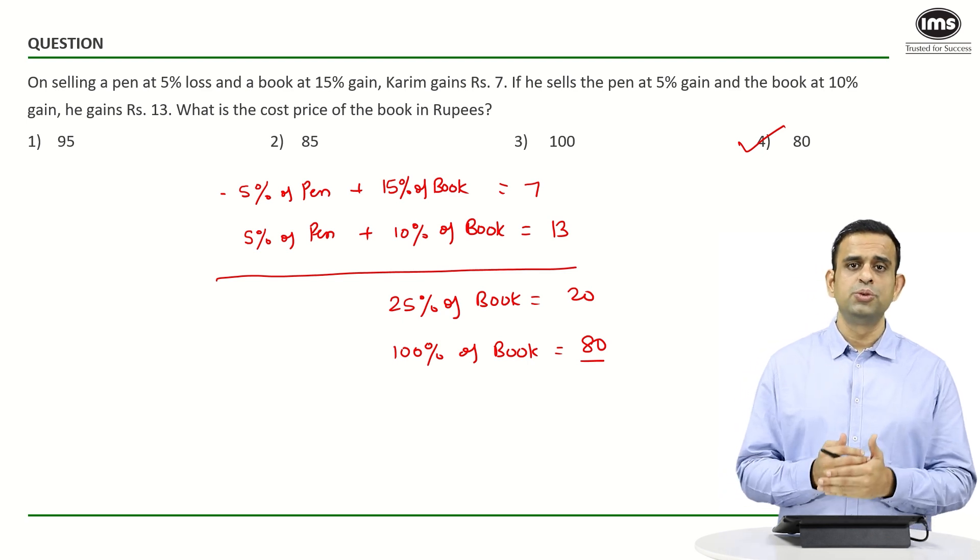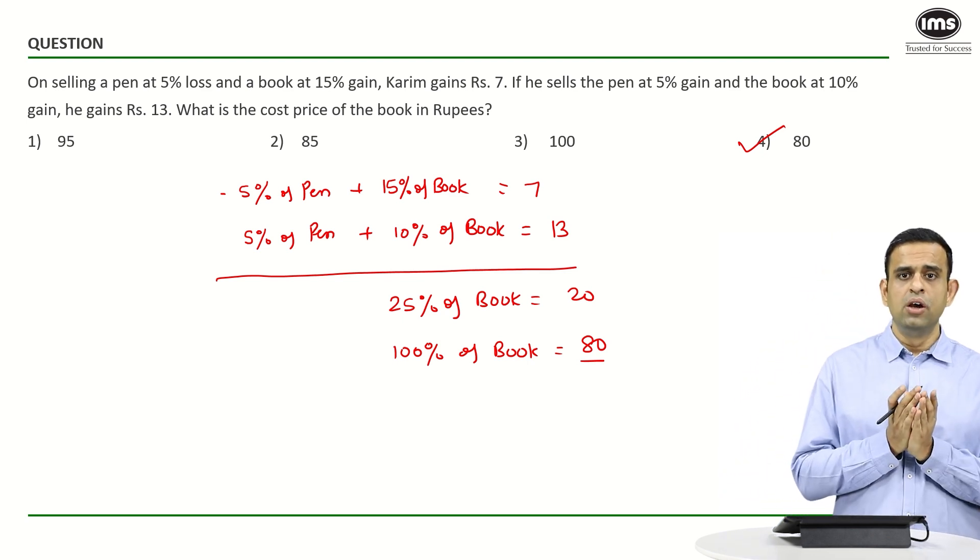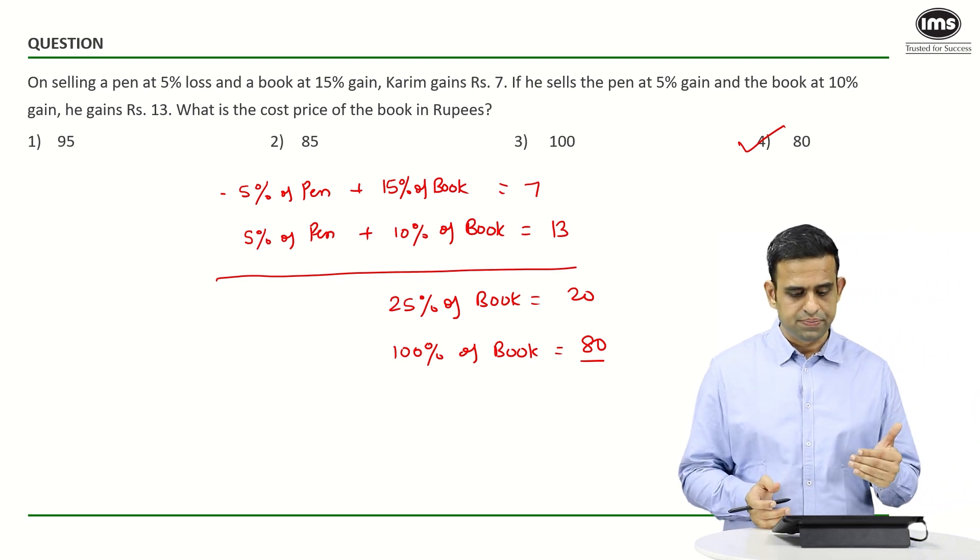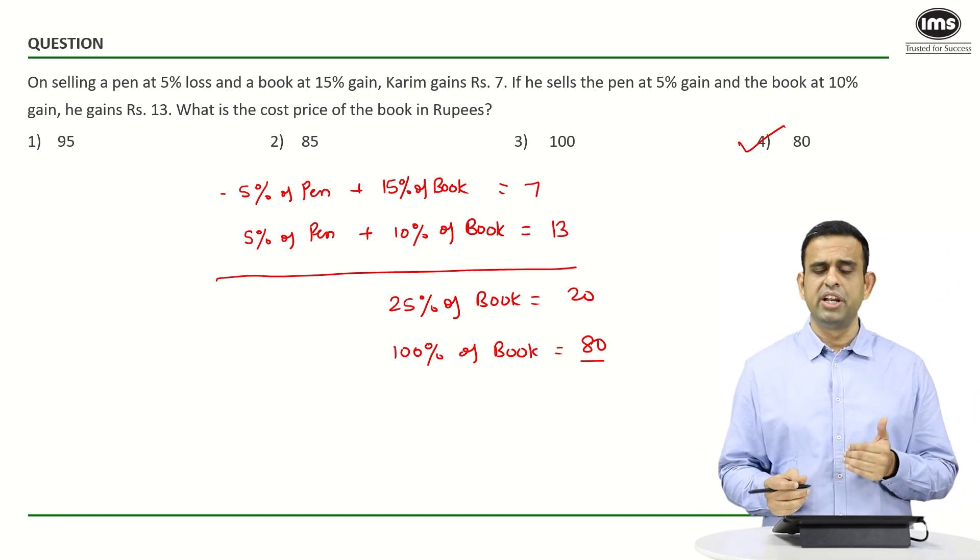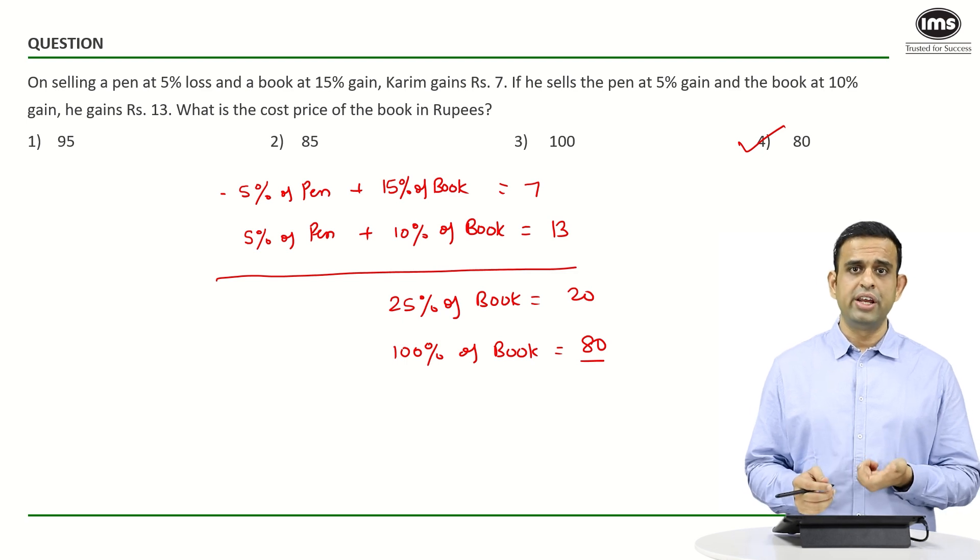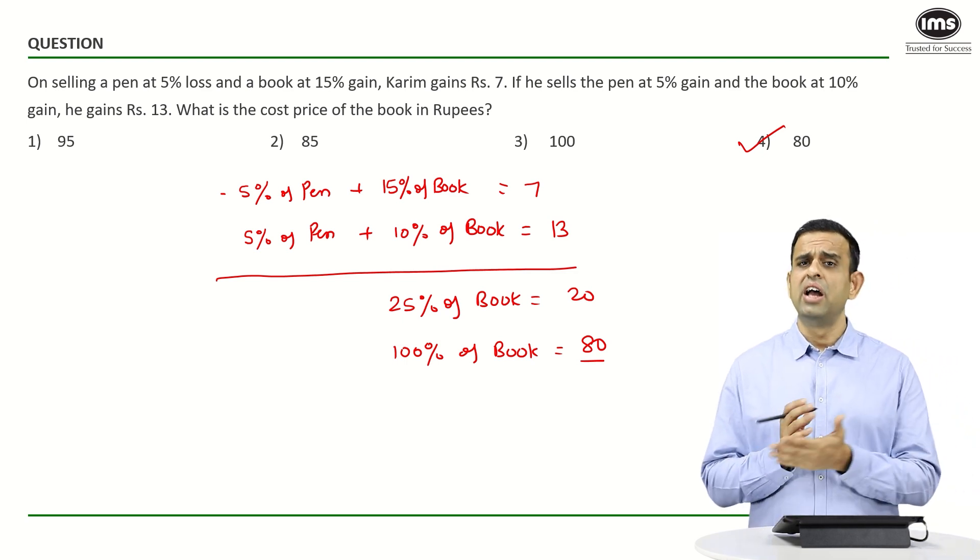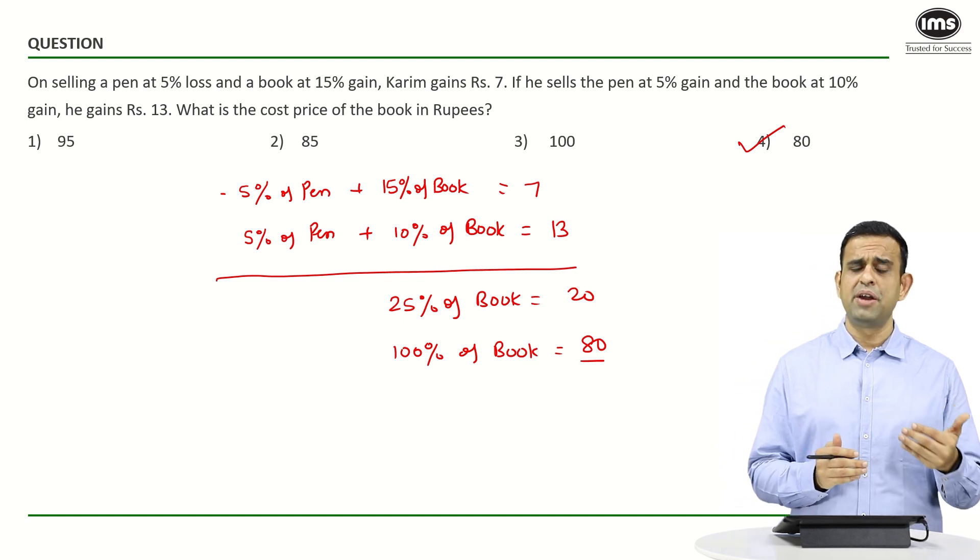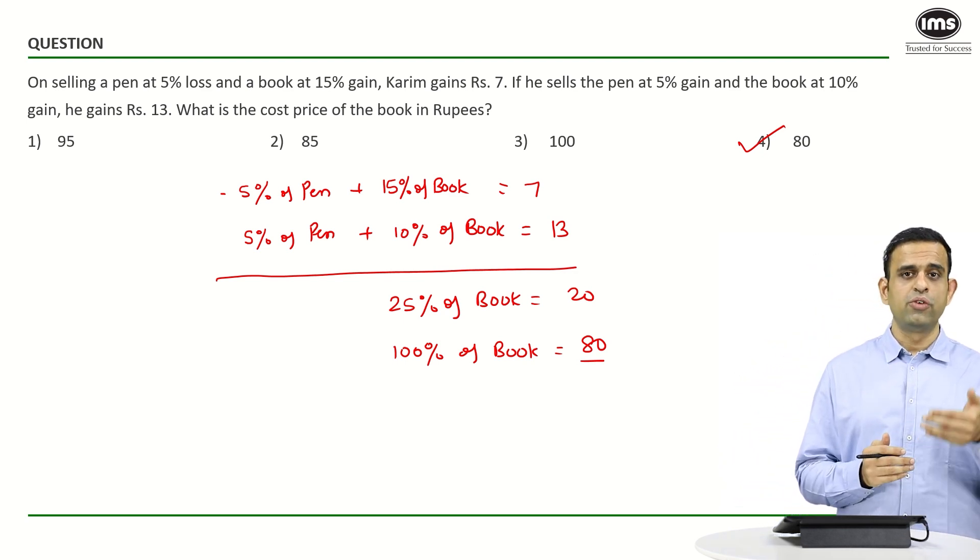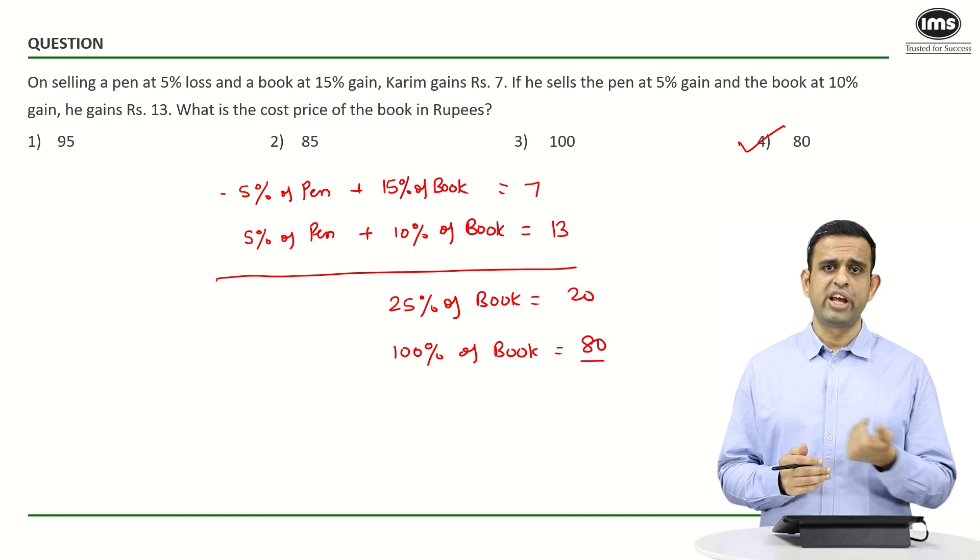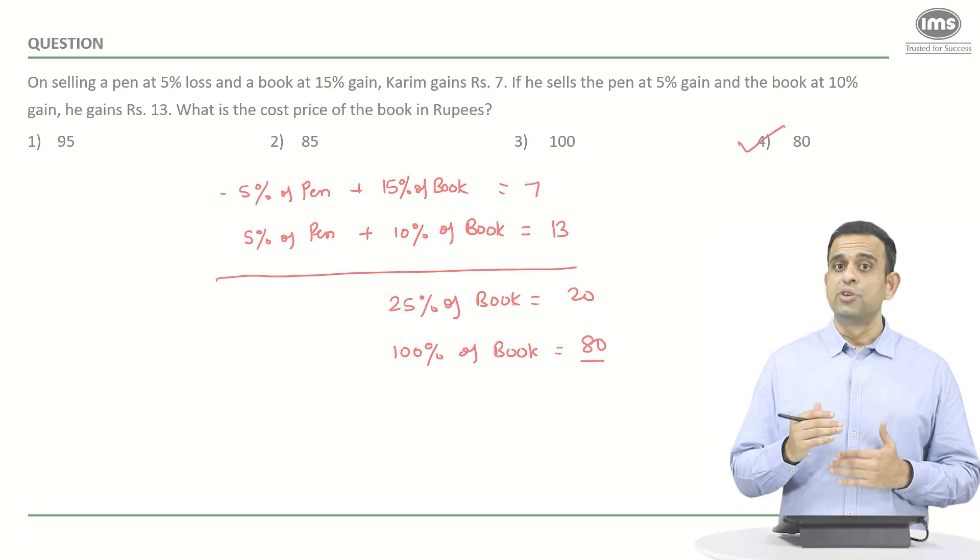And that is equal to the gain obtained from the book itself, which is 15% plus 10%, giving you 25%. So again, if 25% of the cost price of book happens to be 20, and as all of us know that 25% represents one by four, so if one fourth corresponds to 20, one will correspond to four times of 20, giving you the number 80 as the answer.